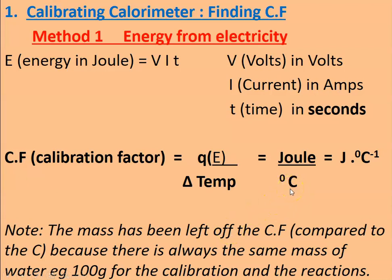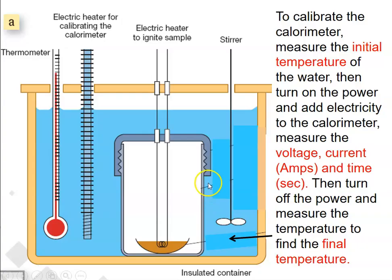It's how many joules for every degree that it goes up. It looks like the specific heat capacity, but we've left off the mass because it's always the same mass of water—for example, 100 grams. So what we're trying to find is how many joules does it take to heat this whole thing by one degree.